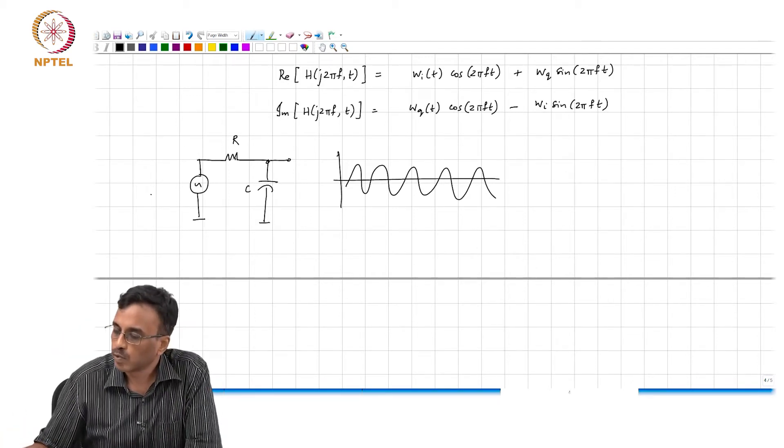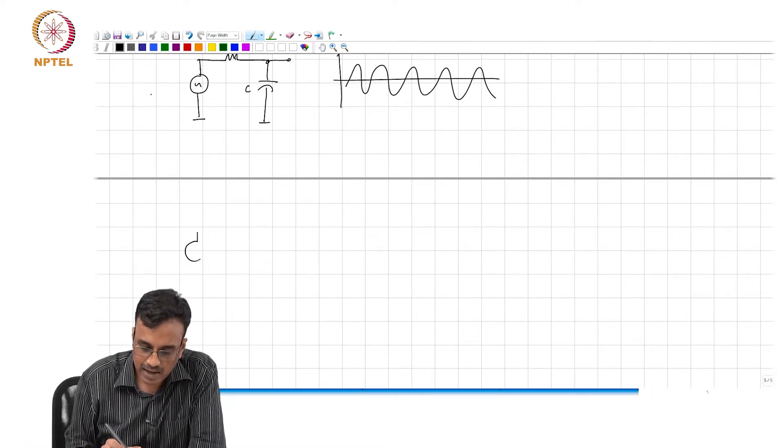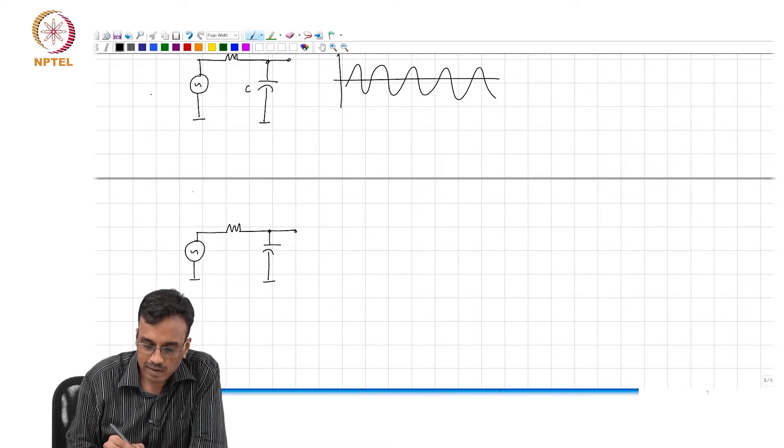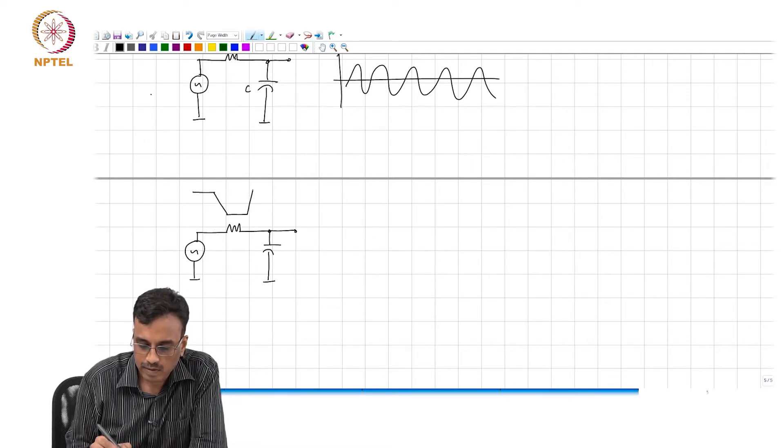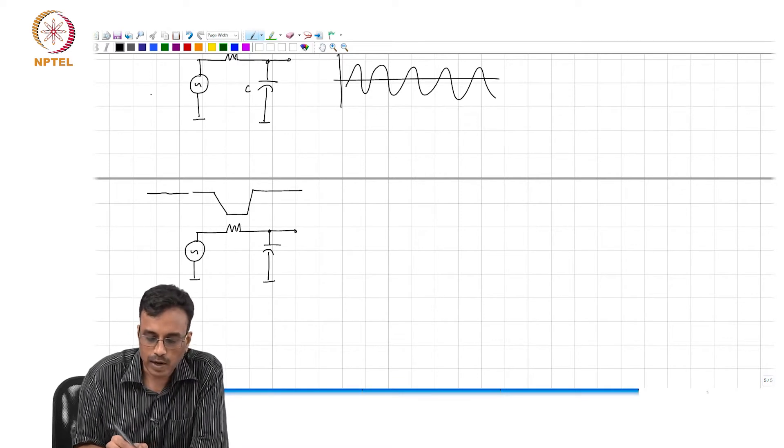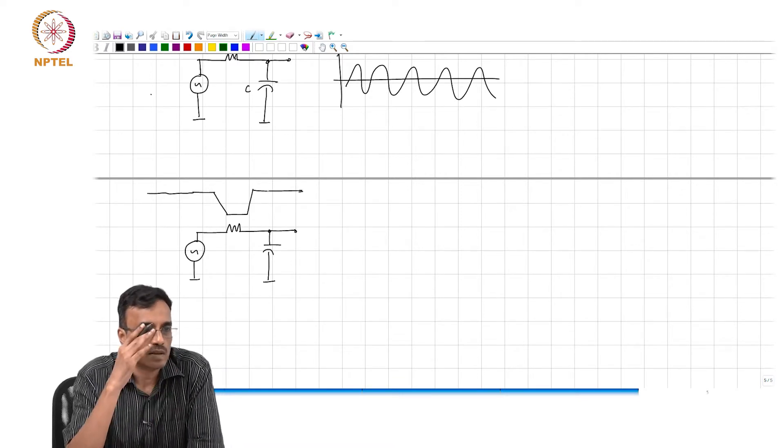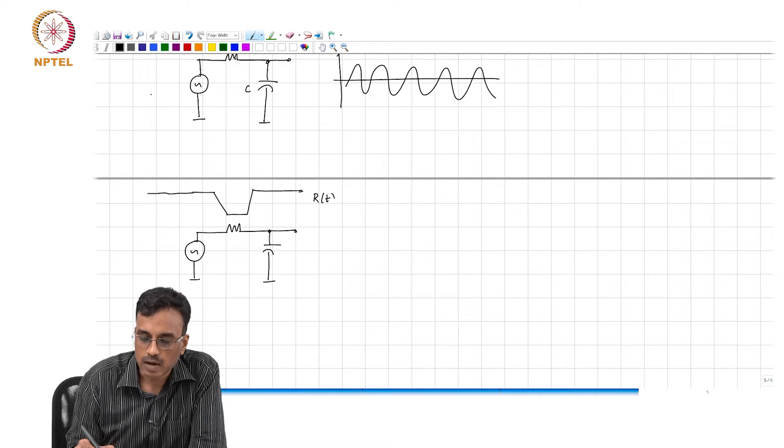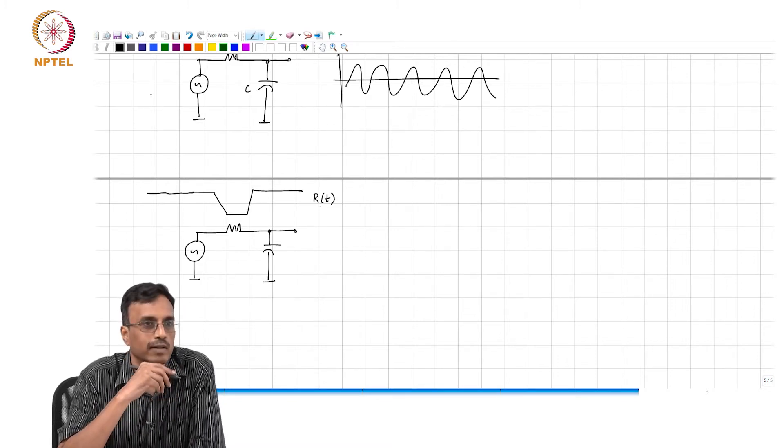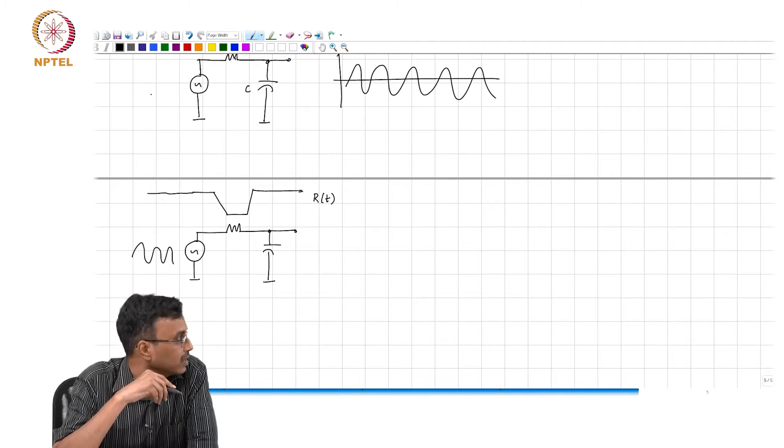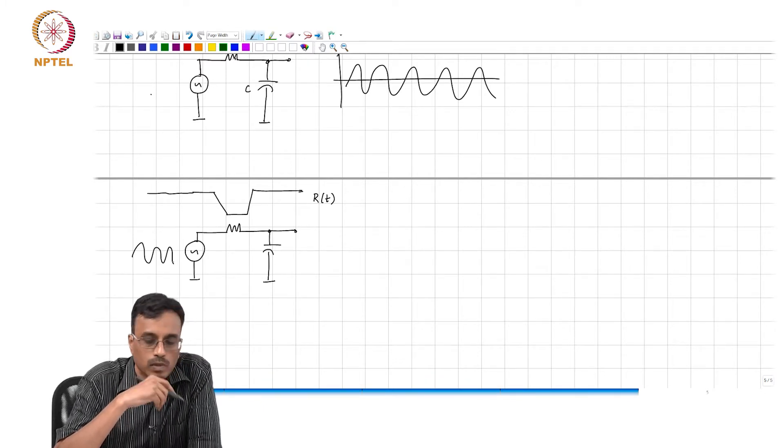Now let us make this a time linear time varying network. What I am going to do is vary this resistance like this. The resistance was constant for a long time and then I pulled it down. This is R of t. What do you expect qualitatively to happen? The input is a sinusoid at some frequency. What do you expect to see at the output?